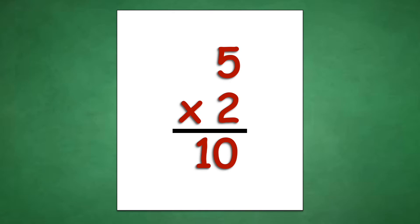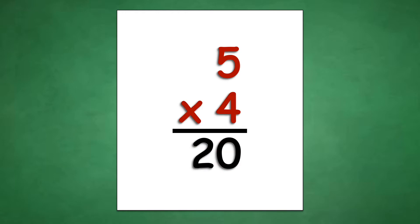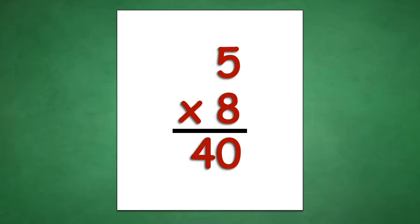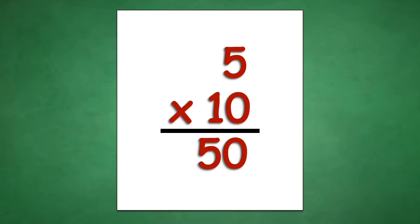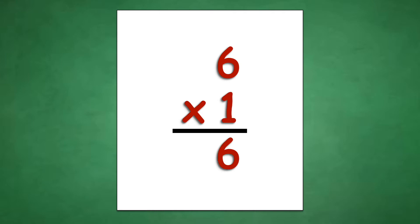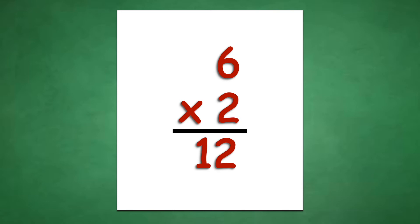Table of 5: 5 times 1 equals 5, 5 times 2 equals 10, 5 times 3 equals 15, 5 times 4 equals 20, 5 times 5 equals 25, 5 times 6 equals 30, 5 times 7 equals 35, 5 times 8 equals 40, 5 times 9 equals 45, 5 times 10 equals 50.